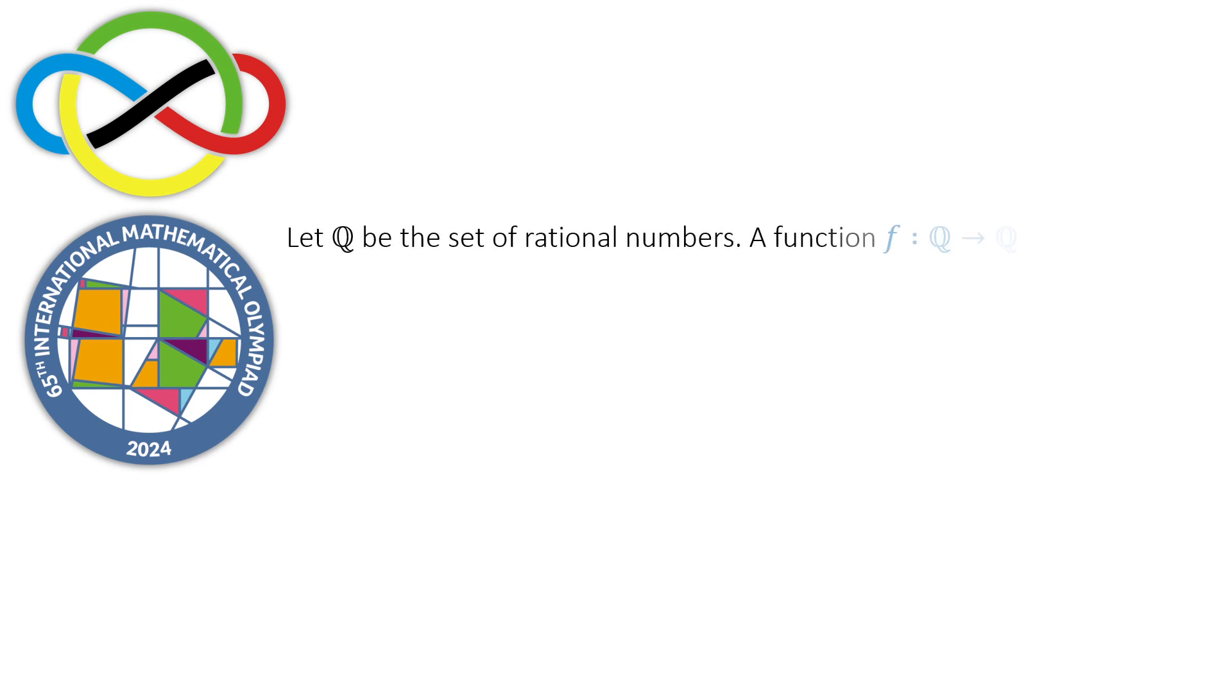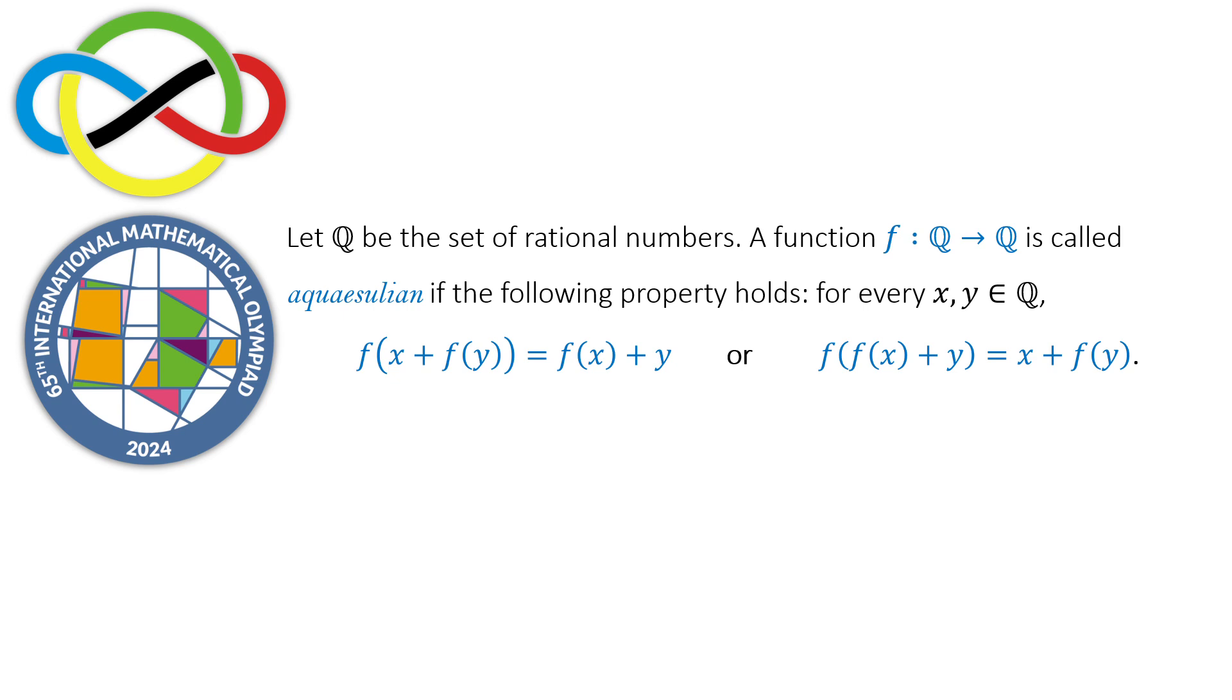Let Q be the set of rational numbers. A function f is called Aquasoulian if the following property holds for every pair of rational numbers: f(x + f(y)) = f(x) + y